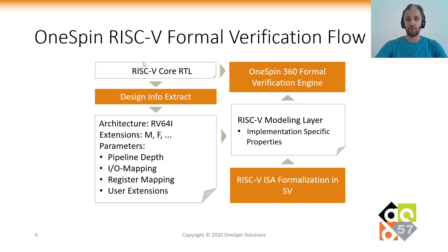The general flow of OneSpin RISC-V formal verification starts with the RISC-V core RTL implementation. Based on this, design-specific information is extracted automatically. Then the user needs to set some parameters, such as the pipeline depth, IO and register mapping, and if custom extensions are implemented, the user needs to specify those as well.